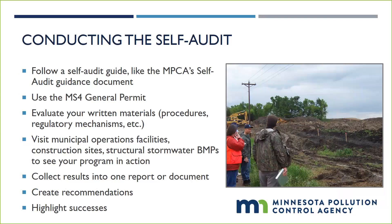The self-audit may have two phases: an office review and field visits. In the office, review all of your written materials, including procedures like spill response procedures or your public education implementation plan, accompanying checklists like site inspection or plan review checklists, or your long-term maintenance agreement for maintaining private structural stormwater BMPs. You may also need to conduct field inspections, such as visiting municipal operations to review BMPs on your facility inventory or accompanying an inspector during construction site inspections. Seeing your program in action will reveal any disconnects between written procedures and what is actually happening on the ground.